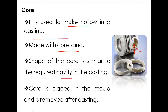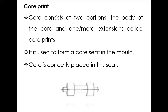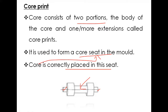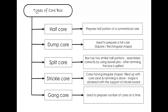The core is placed in the mold and is removed after casting. Once the process is over, finally you have to collapse and remove that core from inside. Core consists of two portions: the body of the core and one or more extensions. The extensions form the core print. The core is correctly placed in the core seat — this is called the core print and core seat.